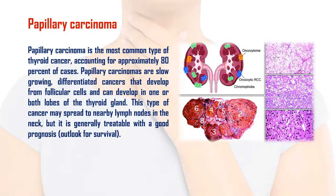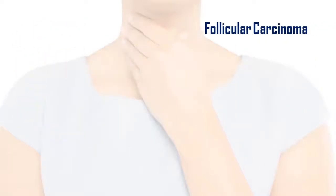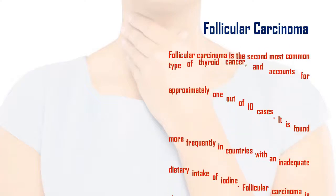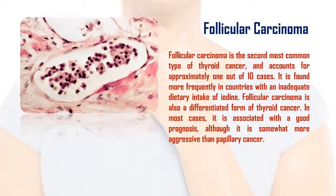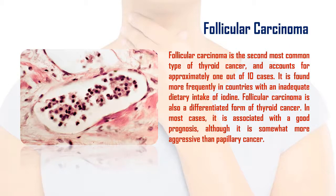Follicular carcinoma is the second most common type of thyroid cancer, accounting for approximately 1 out of 10 cases. It is found more frequently in countries with an inadequate dietary intake of iodine. Follicular carcinoma is also a differentiated form of thyroid cancer, and in most cases is associated with a good prognosis, although it is somewhat more aggressive than papillary cancer.